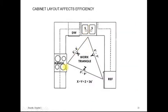Cabinet layout does affect efficiency, and there is an ideal formula that all three legs of the triangle should add up to less than 26 feet. So in this illustration, that's a little less than 6 feet on each side, 18 feet, and of course, depending on the size of the kitchen, what we're able to do with it, but we don't want this to get beyond that, because it will take several more steps to get between each workstation.